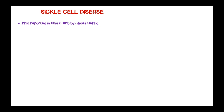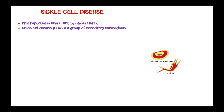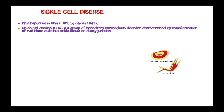Sickle cell disease is one of the hemoglobin disorders, first reported in the United States of America in the year 1910 by James Herrick. It refers to a group of hereditary hemoglobin disorders characterized by transformation of the normal red blood cells into a sickle shape on deoxygenation.